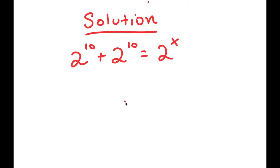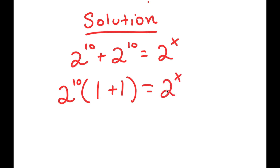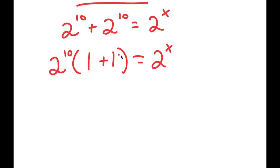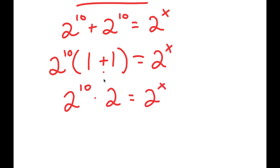To solve this, I'm going to factor out 2 to the power of 10 from my left-hand side. So if I factor out 2 to the power of 10, I get 2 to the power of 10 times (1 plus 1) is equal to 2 to the power of x. Since 1 plus 1 equals 2, I get 2 to the power of 10 times 2 is equal to 2 to the power of x. A simpler way: we have two 2^10s here, and anything added by itself equals that number times 2, so we could have written 2 to the power of 10 times 2 directly.